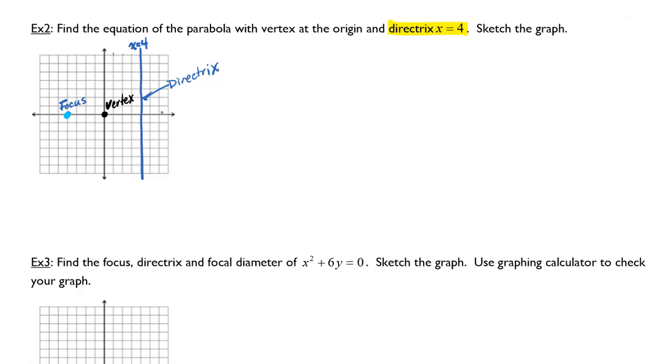The parabola always curves away from the directrix. I know that this parabola has to do something like that. Now it's just a matter of finding the exact equation. The focal diameter is equal to 4p in absolute values. And I also know that p is the distance between the focus and the vertex and also between the vertex and the directrix, which is 4.